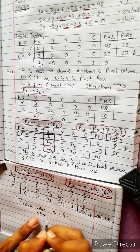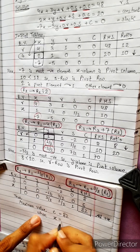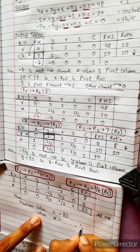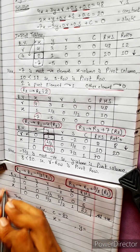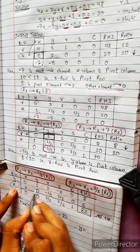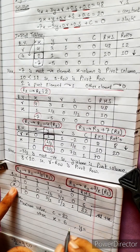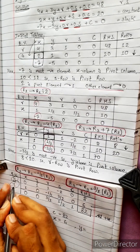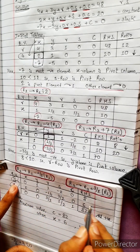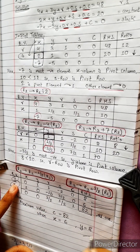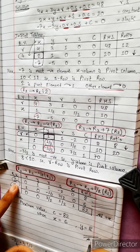Let's check the answer: when x equals 6 and y equals 8, that is the optimal solution.